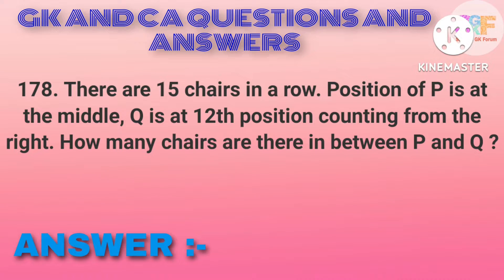There are 15 chairs in a row. Position of P is at the middle; Q is at the 12th position counting from the right. How many chairs are there in between P and Q? Option D: 3.